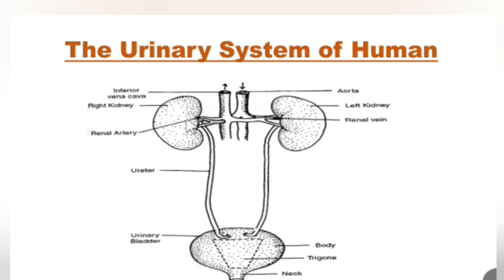The renal artery supplies oxygenated blood to the kidney so it can get energy and perform its function. In turn, the kidney produces deoxygenated blood, which goes from the kidney back to the heart through the renal vein. The renal vein then becomes part of the inferior vena cava, which takes the blood back to the right atrium of the heart.